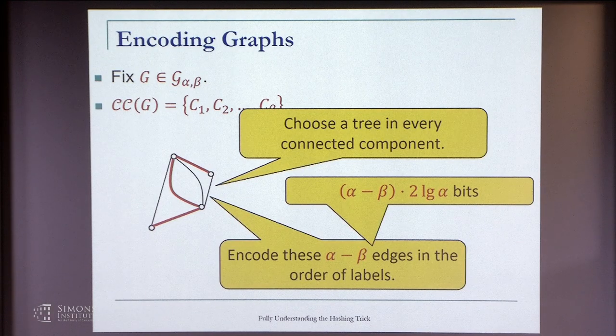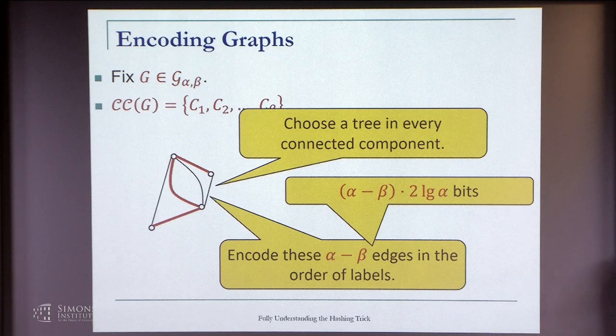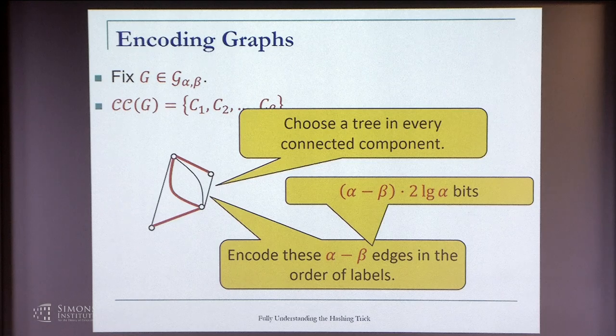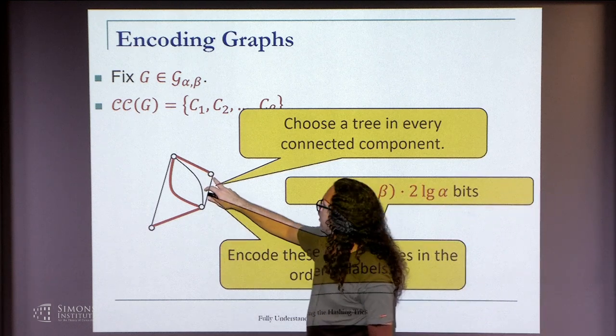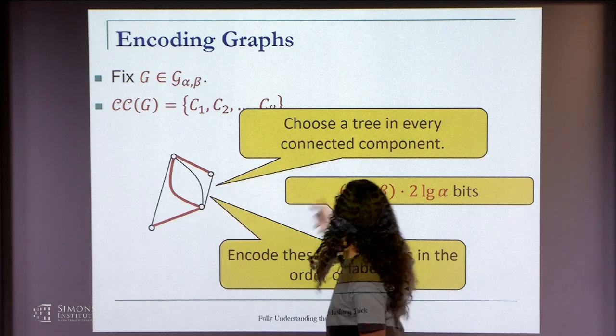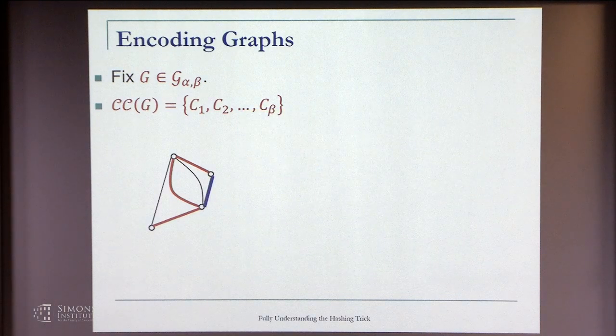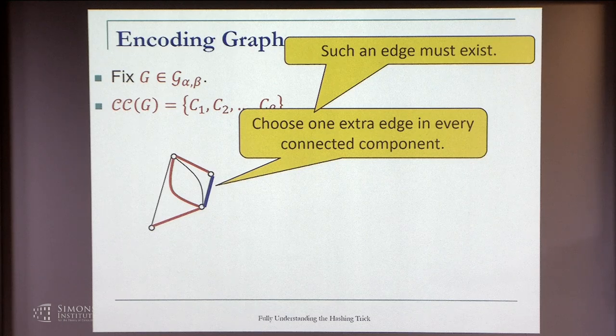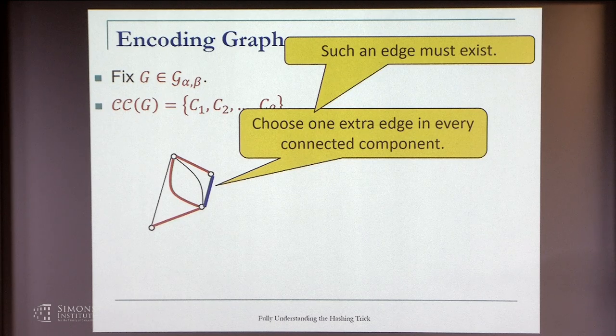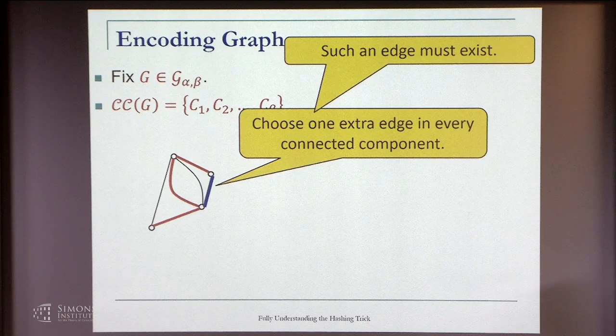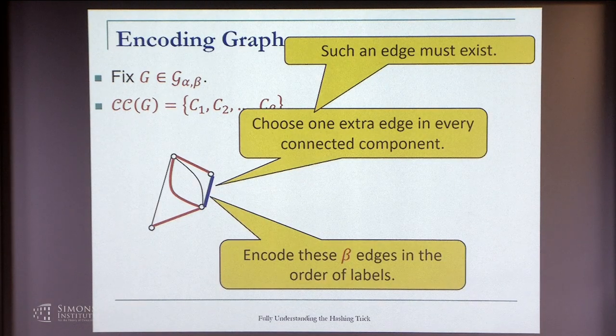We encode these alpha minus beta edges. We have beta connected components. Each component has a tree. The sum of number of edges is alpha minus beta. This can be done using (alpha minus beta) times 2 log alpha bits. We label the alpha nodes. Each node can have a log alpha size label and we simply encode the edges. We choose an extra edge in each connected component and we know that there is such an edge because it's Eulerian.